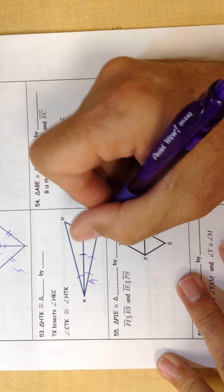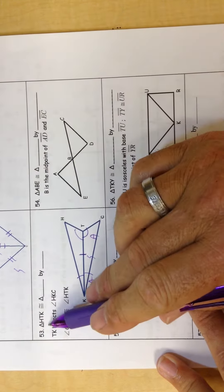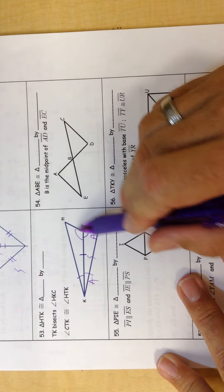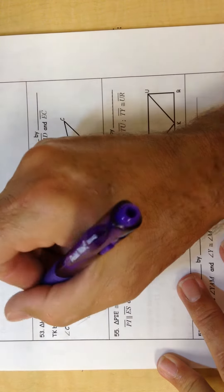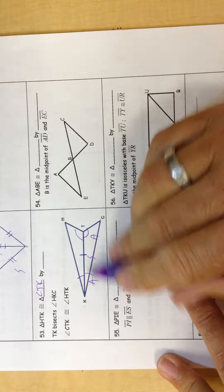So you have angle, side, angle, don't you? And triangle HTK is going to be the same as CTK by angle, side, angle.